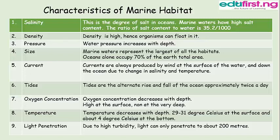Currents are always produced by wind at the surface of the water and down the ocean due to changes in salinity and temperature. Tides are the alternate rise and fall of the ocean, and this takes place approximately twice a day. Oxygen concentration decreases with depth — it is high at the surface, nearly none at the very deep. Temperature also decreases with depth. Light penetration is limited due to high turbidity; light can only penetrate to about 200 meters.